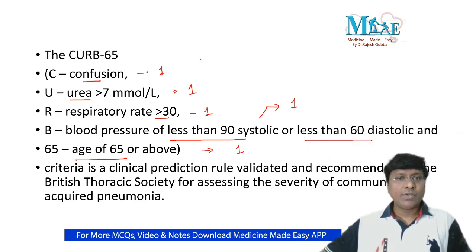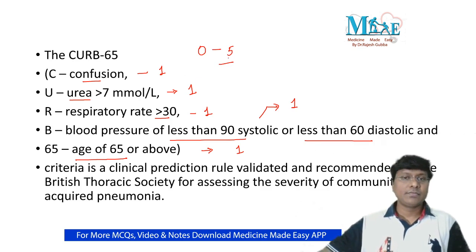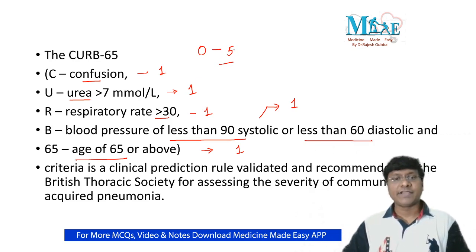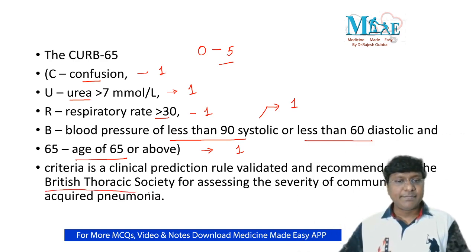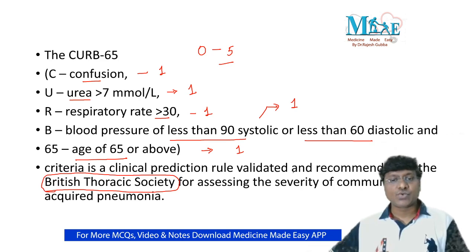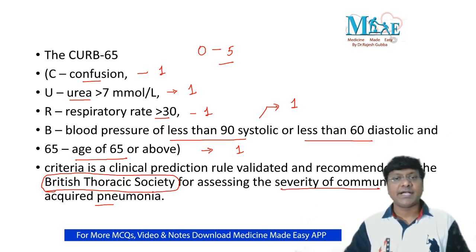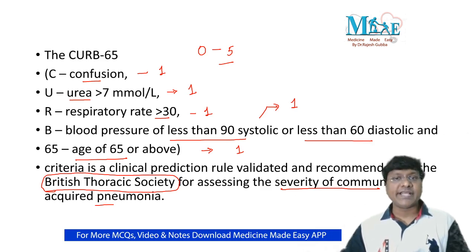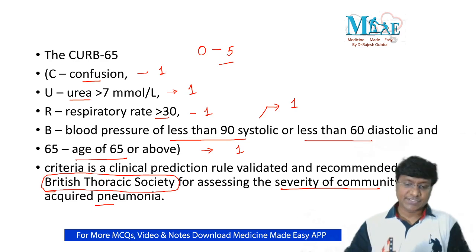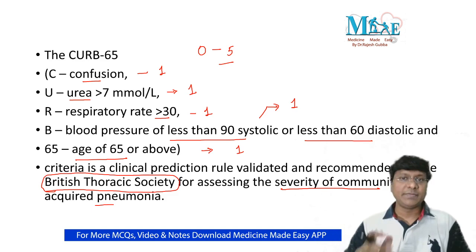The CURB-65 score can range from 0 — if none of the parameters are present — up to a maximum of 5, if all components are present. This scoring system is recommended by the British Thoracic Society for assessing the severity of community-acquired pneumonia. It helps decide whether to treat the patient on an outpatient basis, admit for a short hospital stay, or admit to the ICU. It also predicts the percentage of mortality.